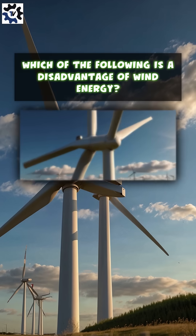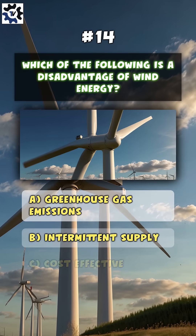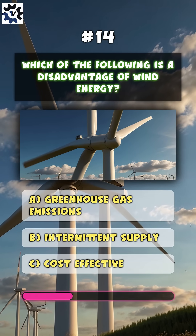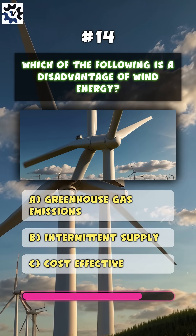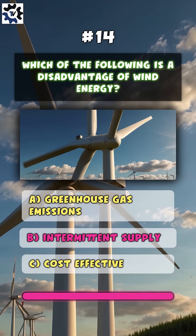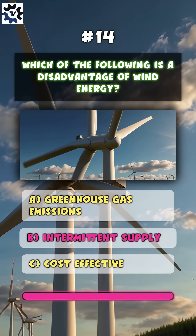Which of the following is a disadvantage of wind energy? B. Intermittent supply.